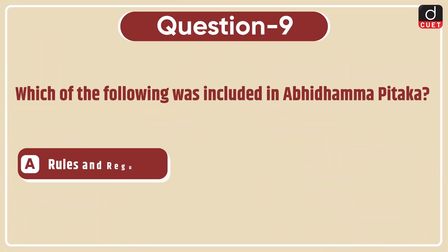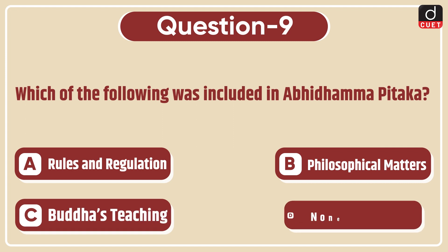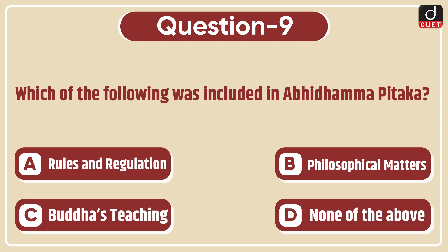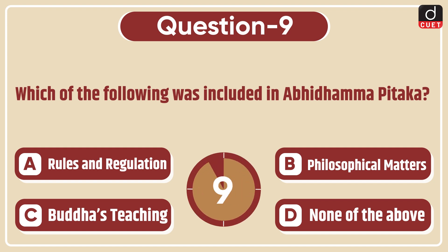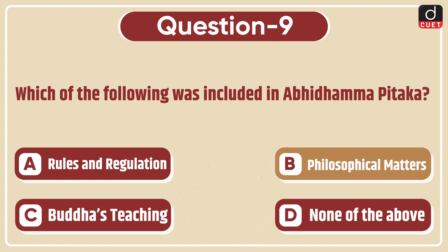Next question: Which of the following was included in the Abhidhamma Pitaka — Rules and Regulations, Philosophical Matters, Buddha's Teaching, or None of the above? The correct answer is option B, Philosophical Matters.